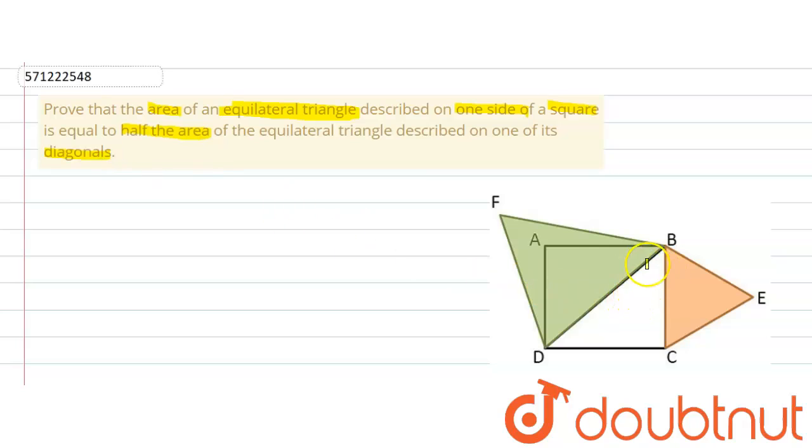In the question we are required to prove that if ABCD is a square, then the area of the equilateral triangle described on one of the sides, let's say BC of the square, is equal to half of the area of the equilateral triangle described on one of the diagonals, let's say BD of the square.